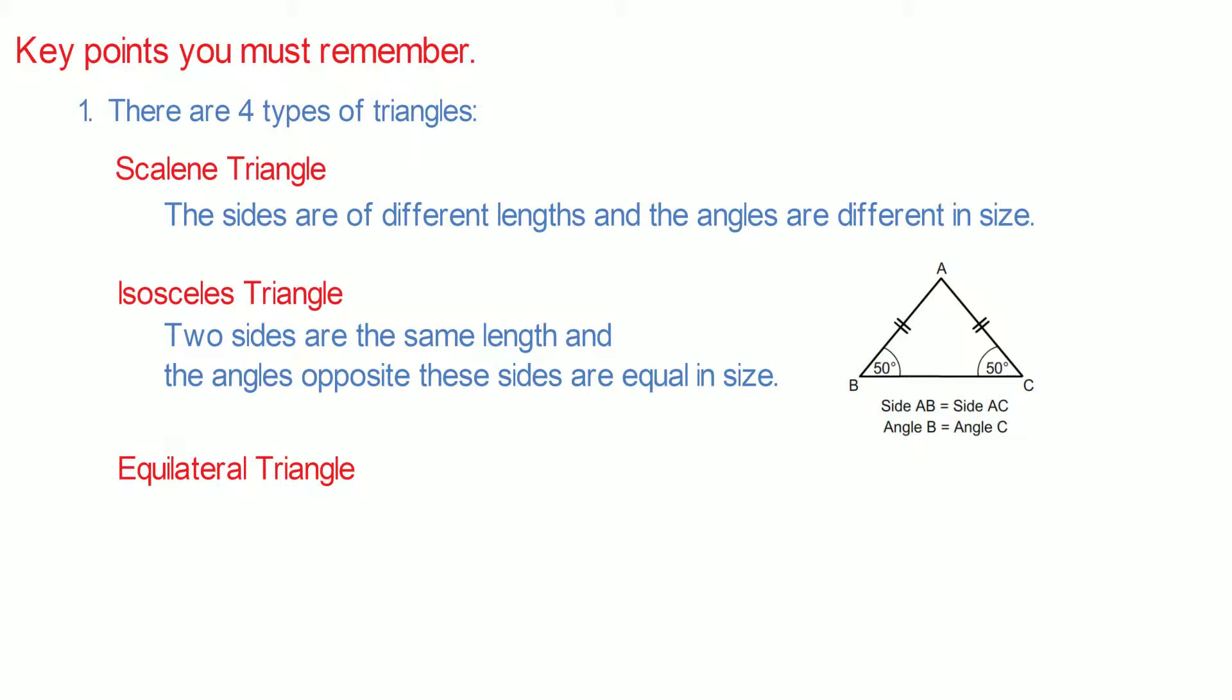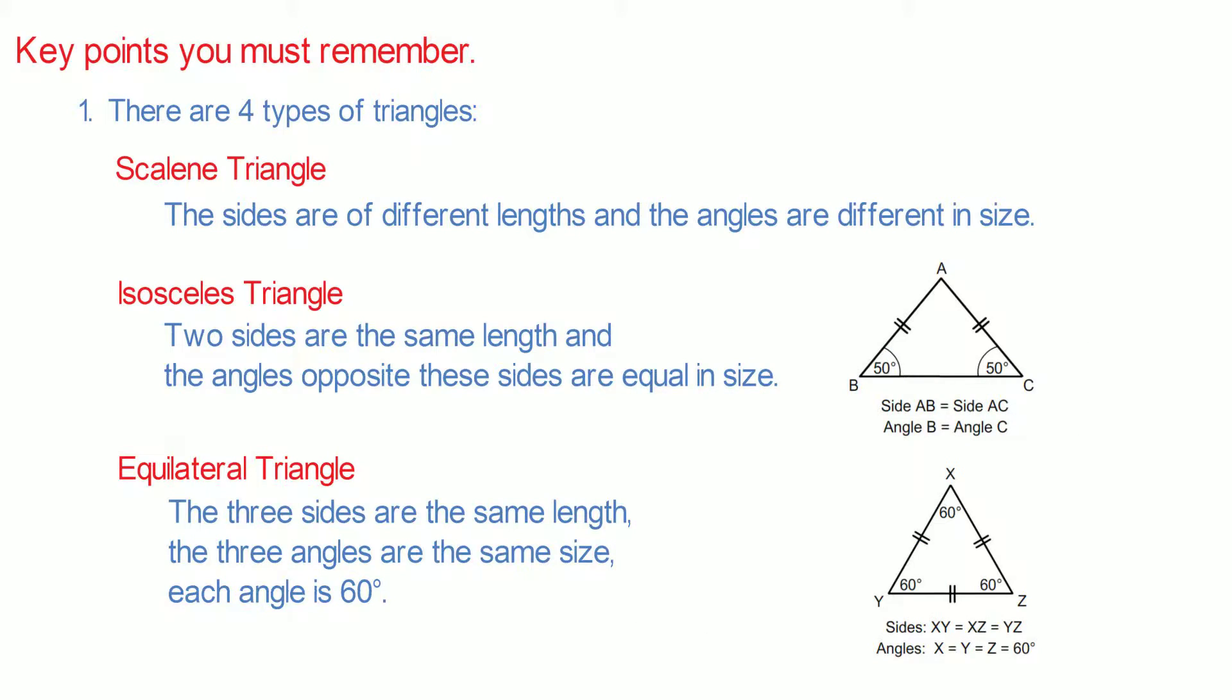Equilateral triangle. The three sides are the same length. The three angles are the same size. Each angle is 60 degrees. In this triangle, XY equals XZ equals YZ. Angle X equals angle Y equals angle Z equals 60 degrees.